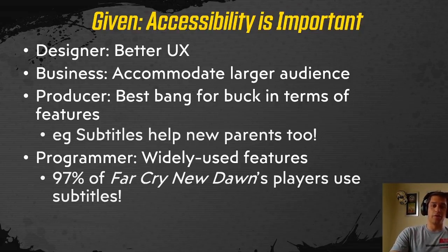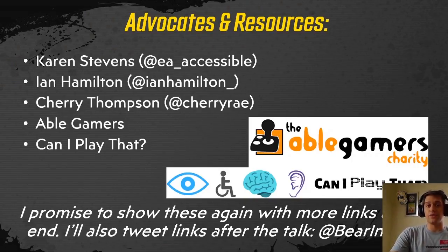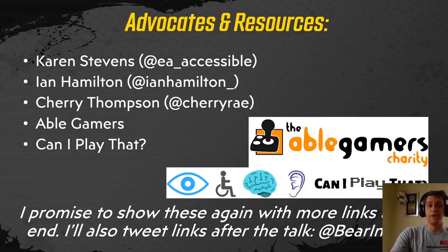Now if you're not convinced why accessibility is important, don't take my word for it. We were successful in Borderlands 3 and this talk is only a case study about that successful approach for accessibility features. There are plenty of brilliant people out there talking and writing about why accessibility should be at the forefront of devs' minds. I strongly encourage just listening to advocates and outlets for a while. Karen Stevens' research at EA is second to none, and Ian Hamilton and Cherry Thompson are wonderful advocates. Additionally, the AbleGamers charity does incredible work helping gamers, including creating custom control rigs. And finally, the Can I Play That organization has fantastic articles in review, including Borderlands 3's perfect mobility score and 7 out of 10 dev scores.